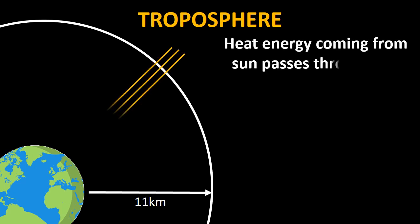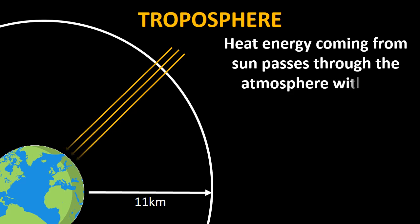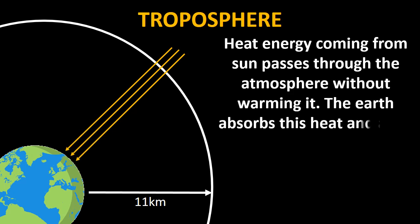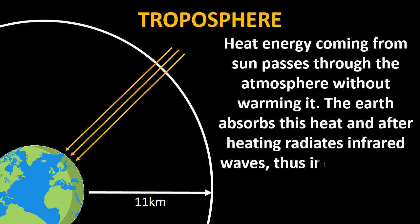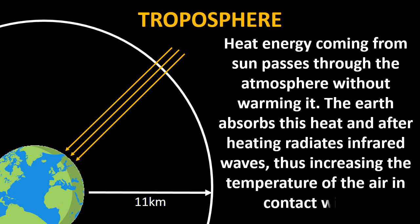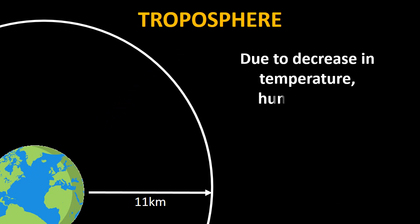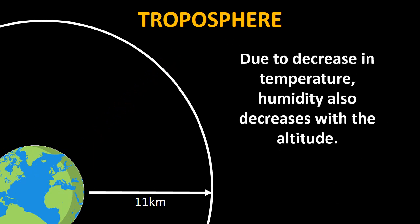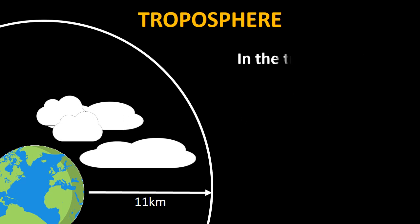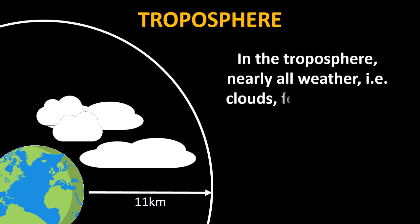The reason for the fall in temperature with increasing altitude is that heat energy coming from the sun passes through the atmosphere without warming it. The earth absorbs this heat and after heating radiates infrared waves, thus increasing the temperature of the air in contact with it. Due to the decrease in temperature, humidity also decreases with altitude. In the troposphere, nearly all weather — i.e. cloud, fog, etc. — exists.